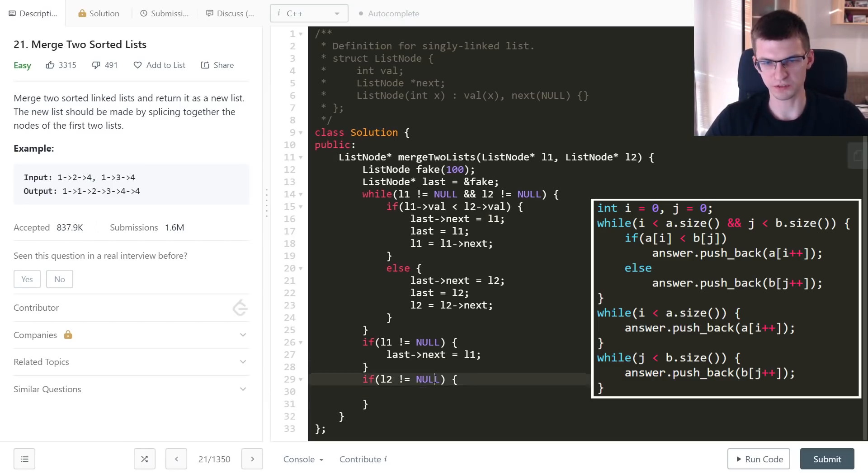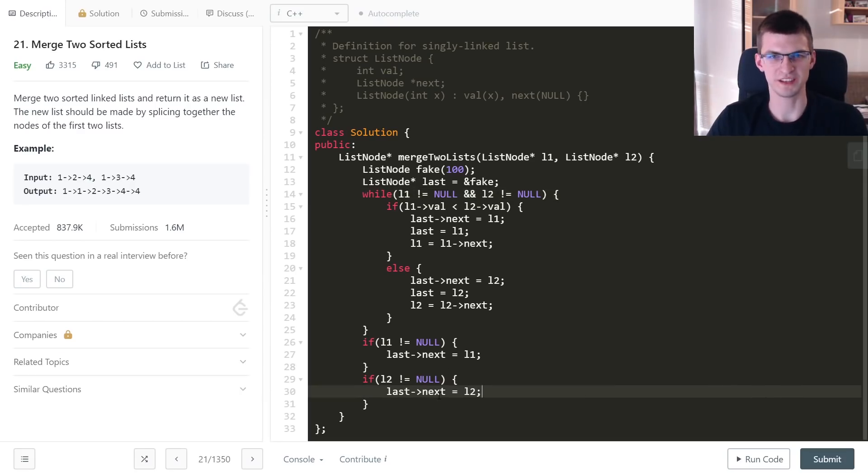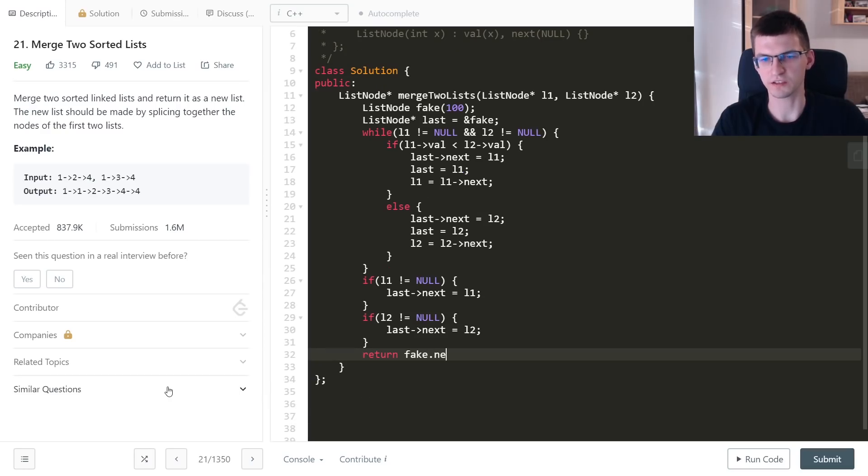I'm just saying if L2 is not null, do the same. Both those things are impossible at the same time, because if they are both true, then while loop would continue. The last.next is L2.